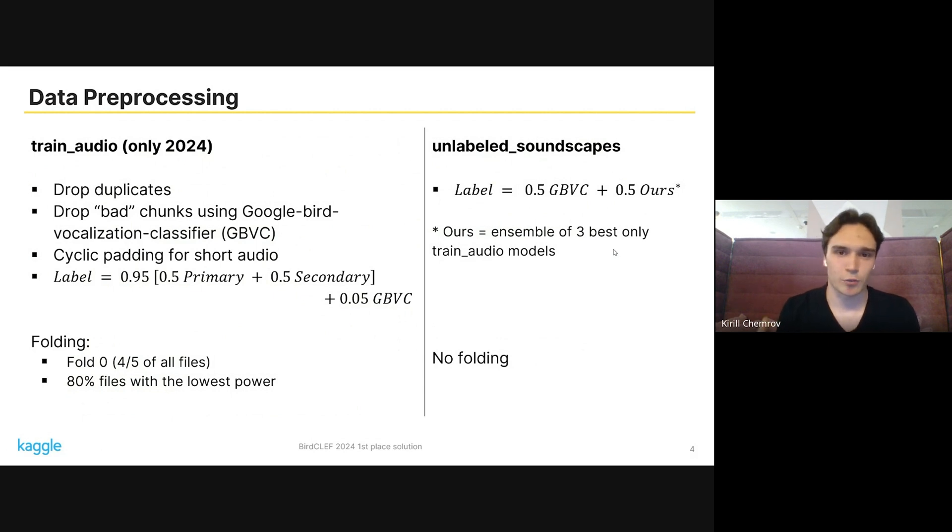Those folds give the best public score. For every model for the final ensemble, we use the whole data, so there is no folding.